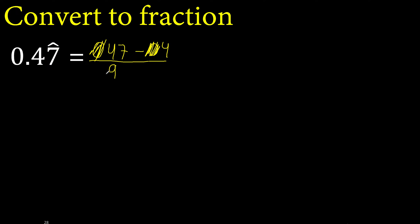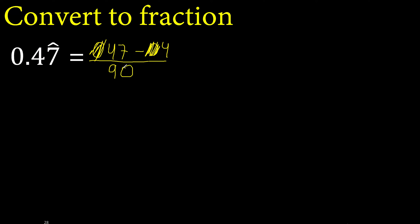One number, one time. After the point, there is one number outside the symbol. Therefore, 0. Always 0. One number, one time. Subtract.